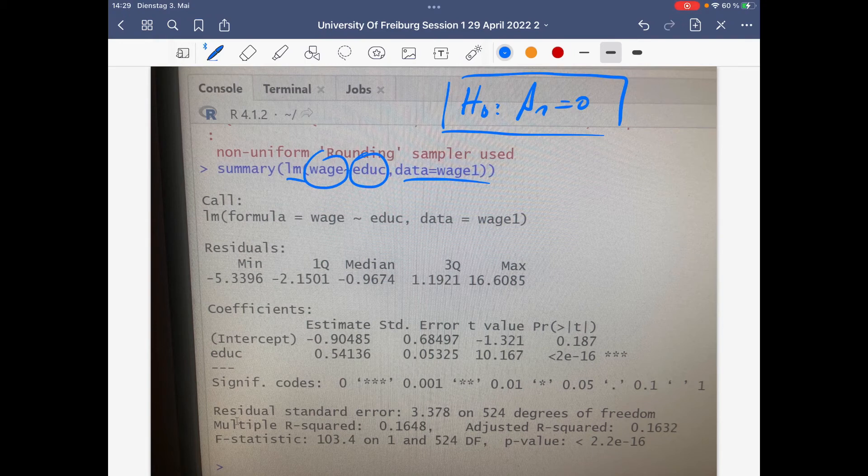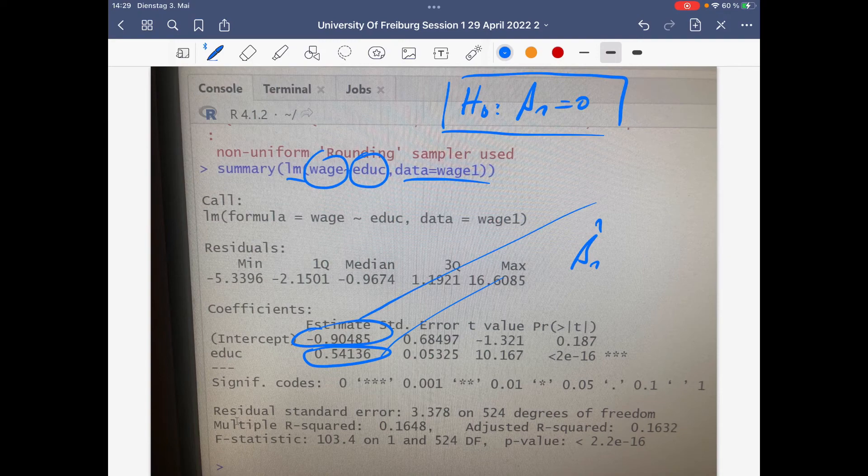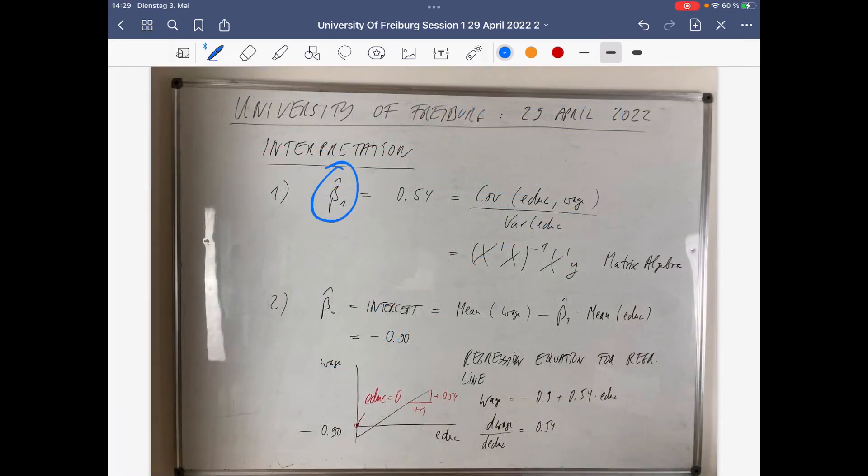The OLS then yields two estimations: the estimated regression coefficient beta 1 hat and the estimated intercept beta 0 hat. The estimated regression coefficient is in this case 0.54, which is covariance education, wage divided by variance education.